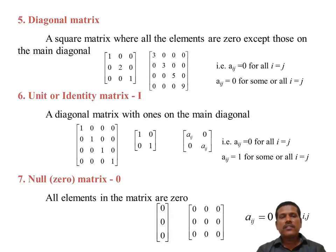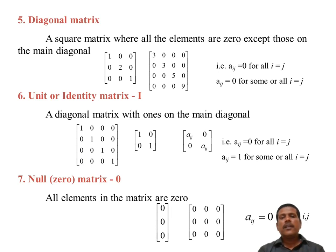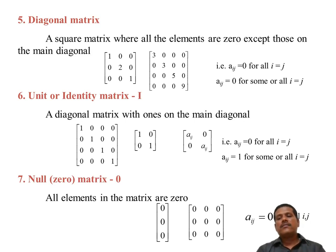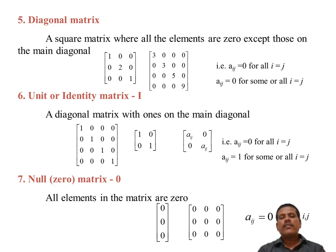The diagonal matrix: each non-diagonal element is equal to 0 — that is called a diagonal matrix. A unit matrix or identity matrix is a diagonal matrix with 1 on the main diagonal; all diagonal elements are equal to 1 and non-diagonal elements are equal to 0 — that is called identity matrix. A null matrix is one where all elements are equal to 0 — that is called null matrix.